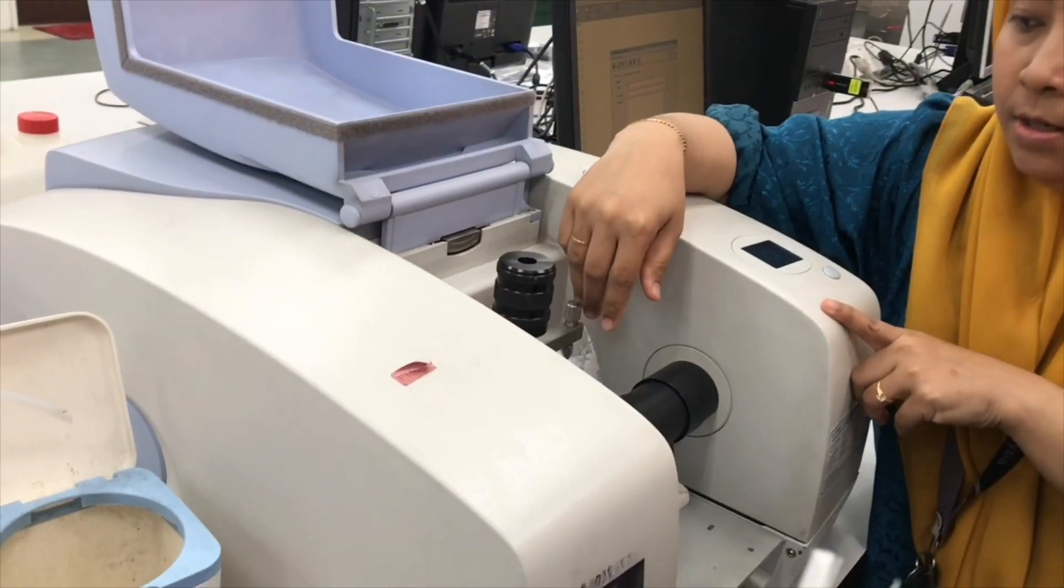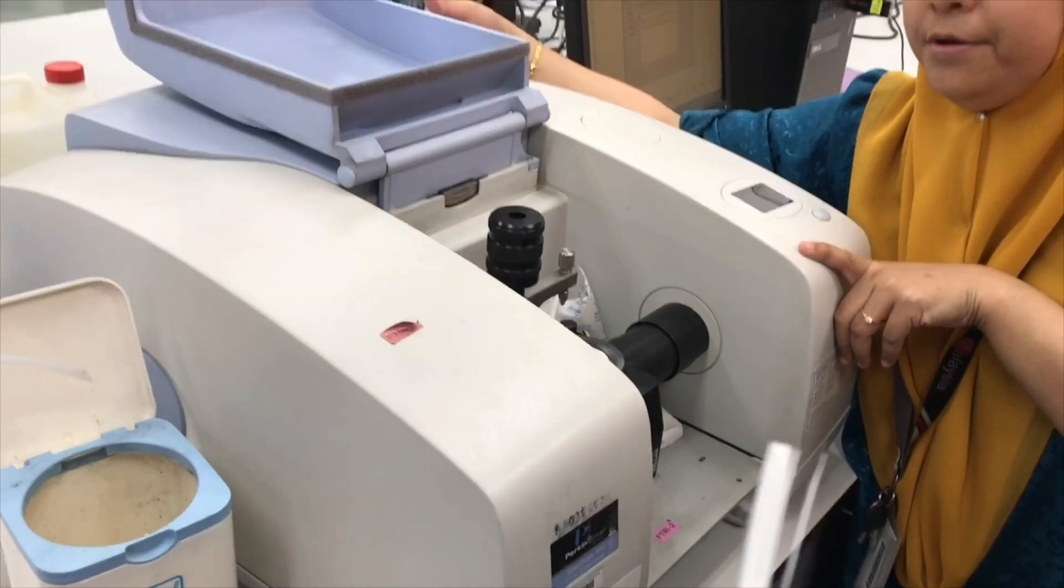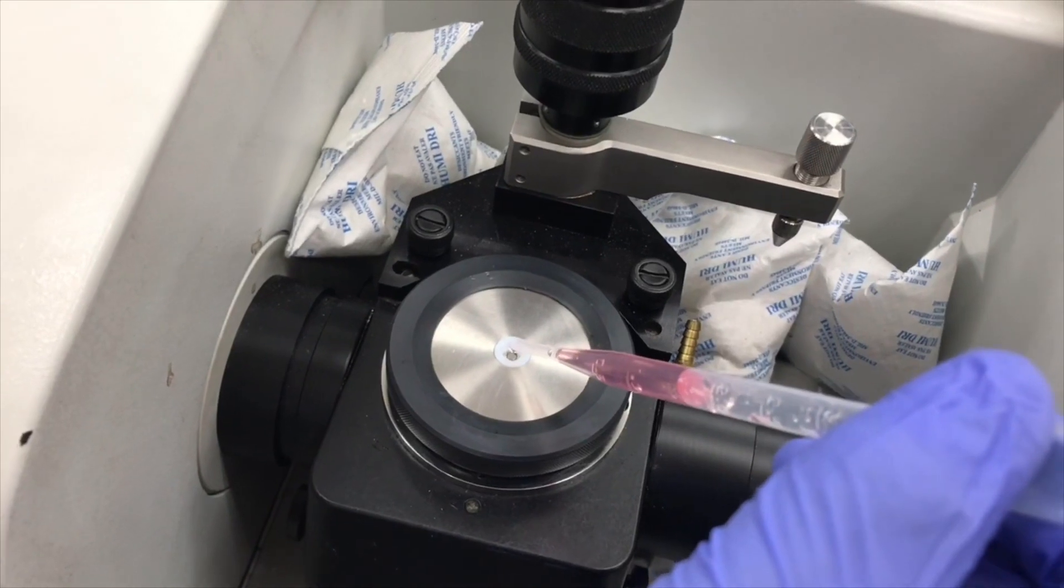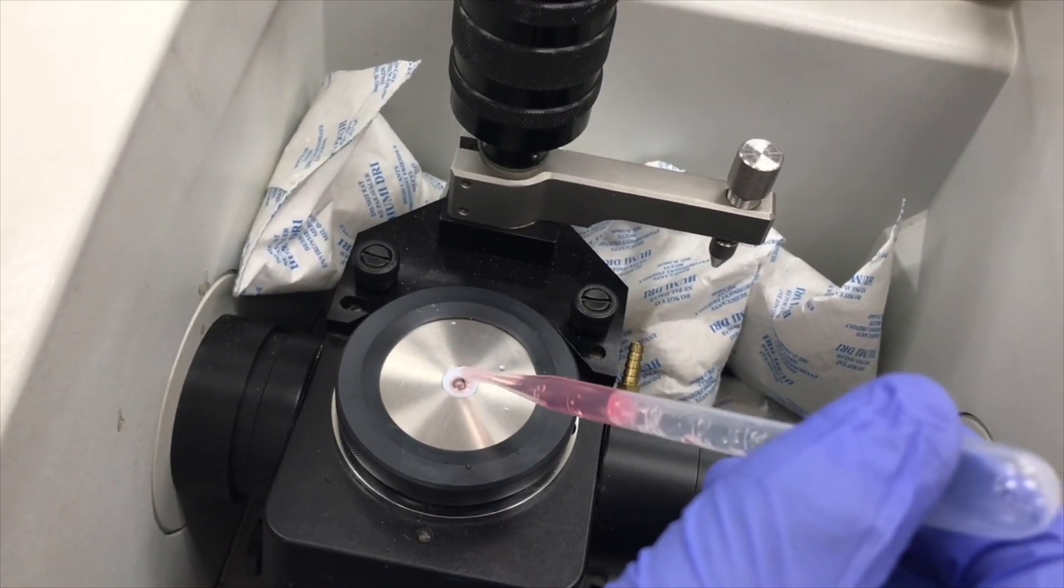Next I will show you the equipment that we use which is the FTIR spectrum 100, a Fourier transform infrared spectrometer. To start, just put one drop of our sample, which is the beverage, on the surface.